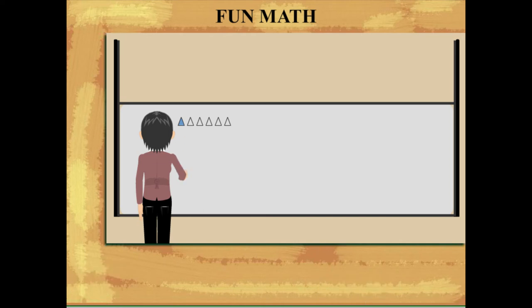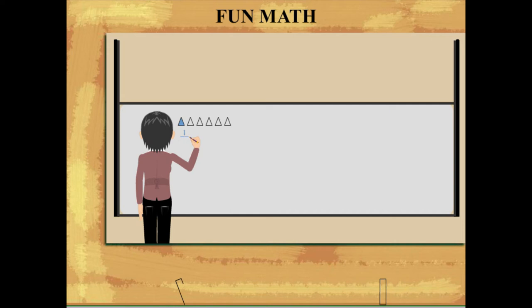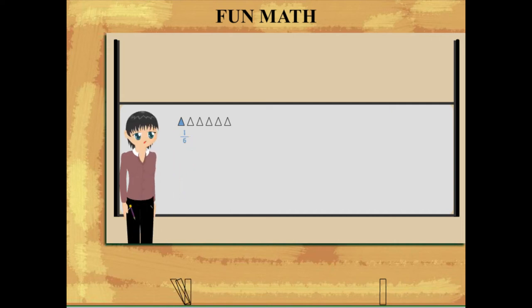She now colors one triangle and forms the fraction one out of six, or one upon six, that is one part out of six.